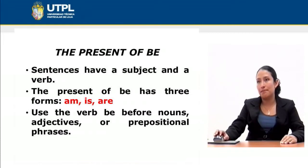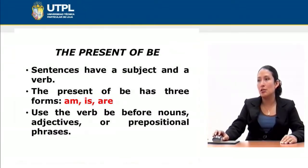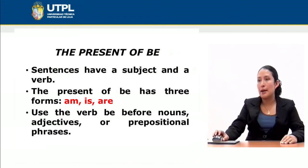First, the present of 'be.' Sentences have a subject and a verb. As you know, when we are writing or speaking in English we need to form a grammar structure with subjects and verbs. The present of 'be' has three forms: am, is, or are. We use the verb 'be' before nouns, adjectives, or prepositional phrases. When we are talking about am, is, or are, it is important to understand the personal pronouns, since not all of them are related with the first or third singular personal pronouns.